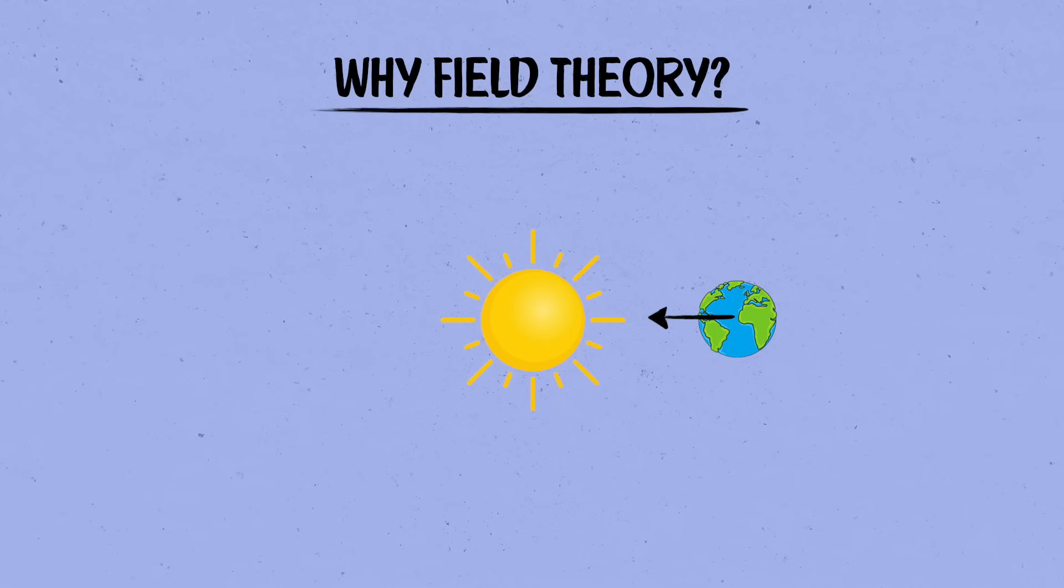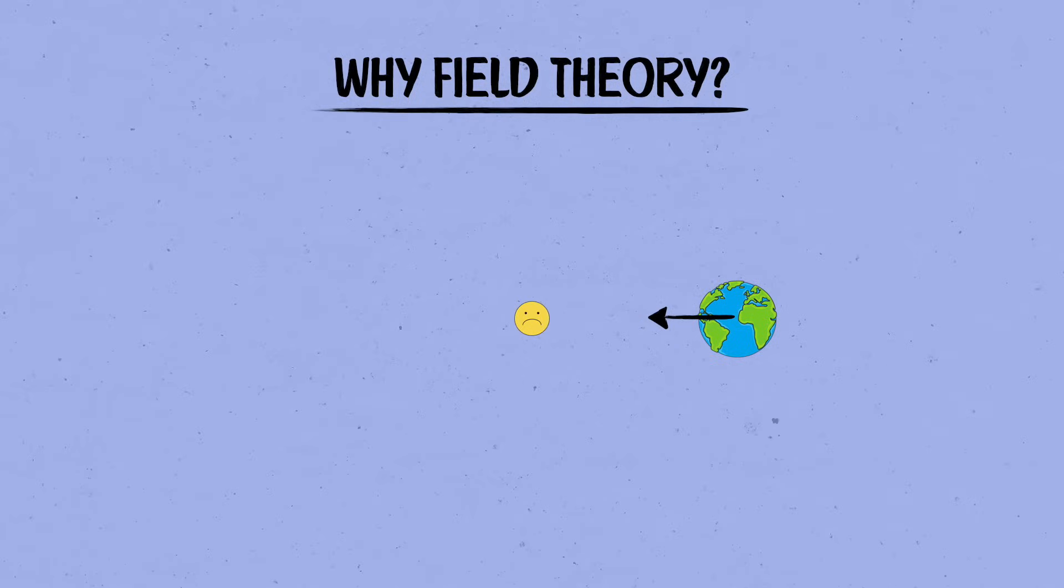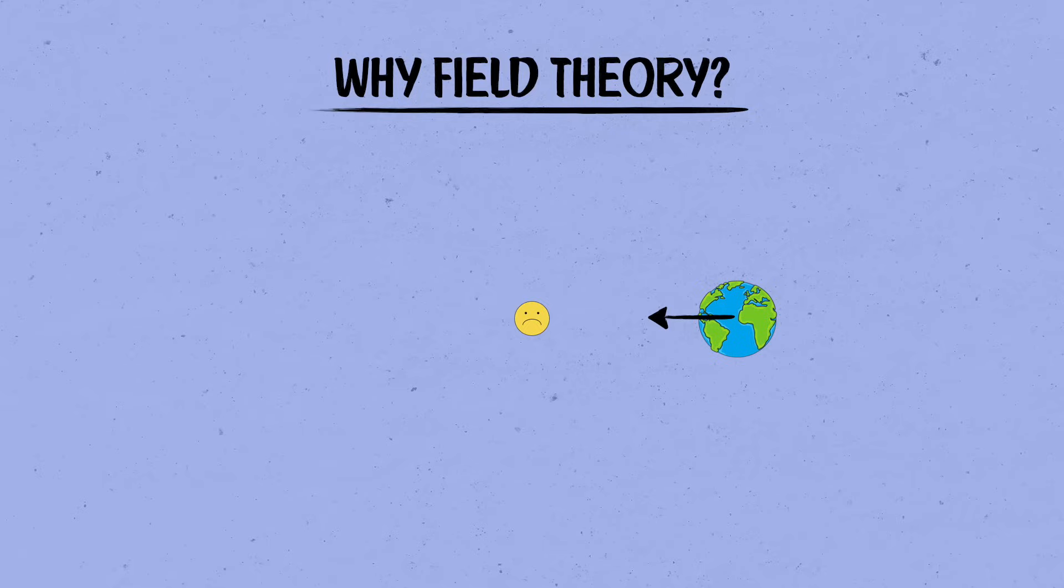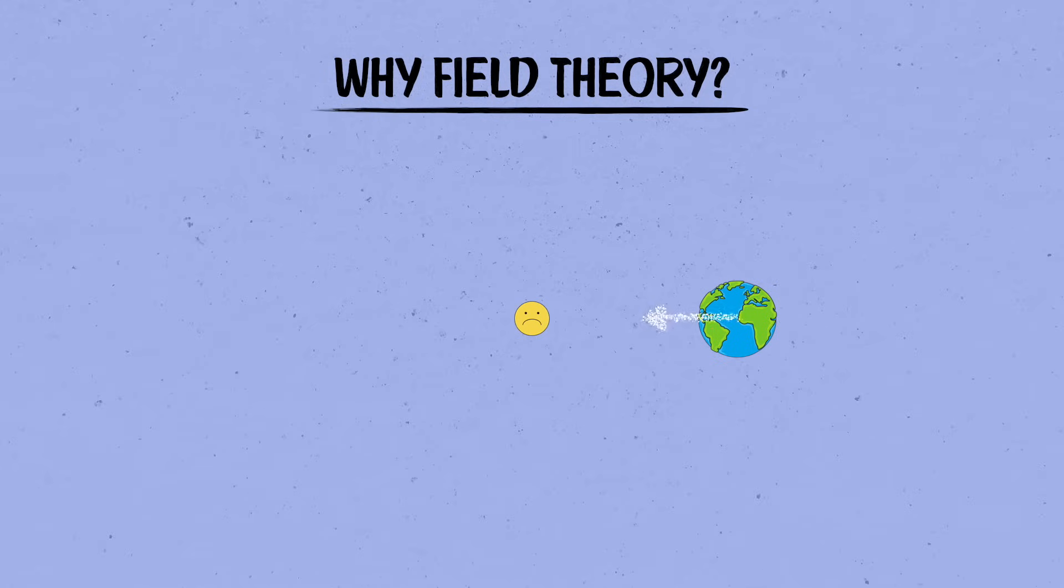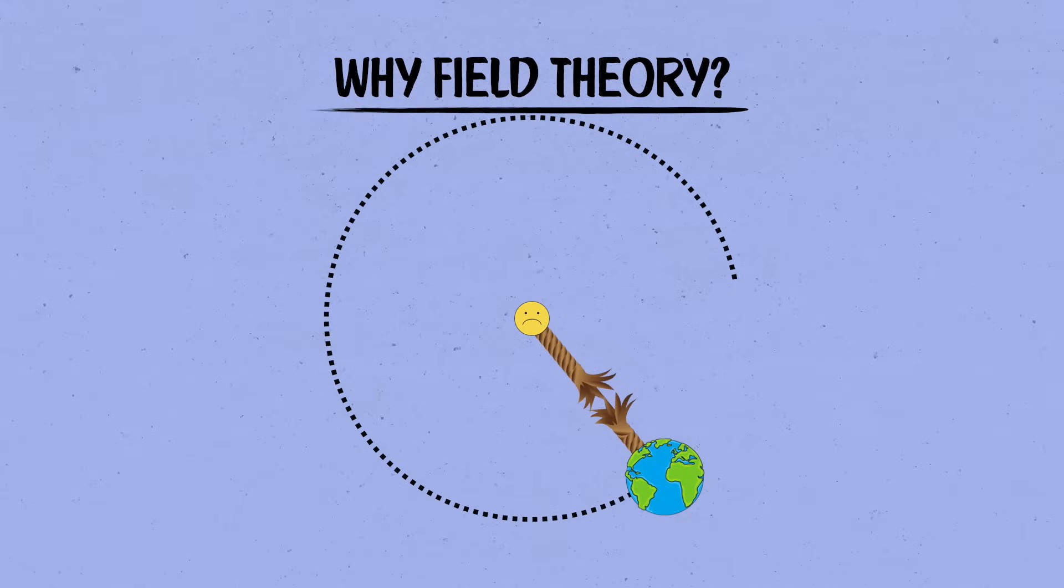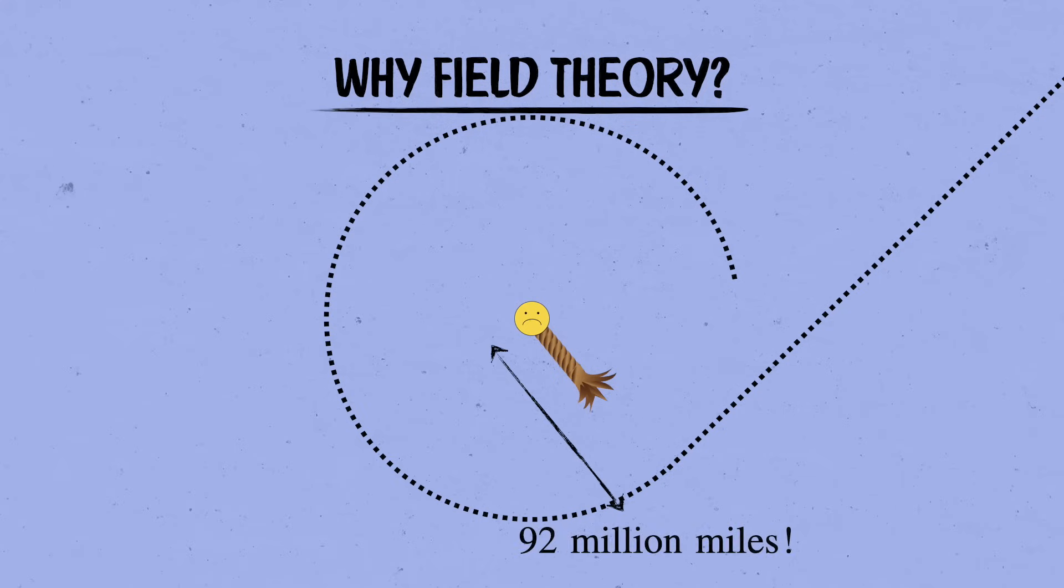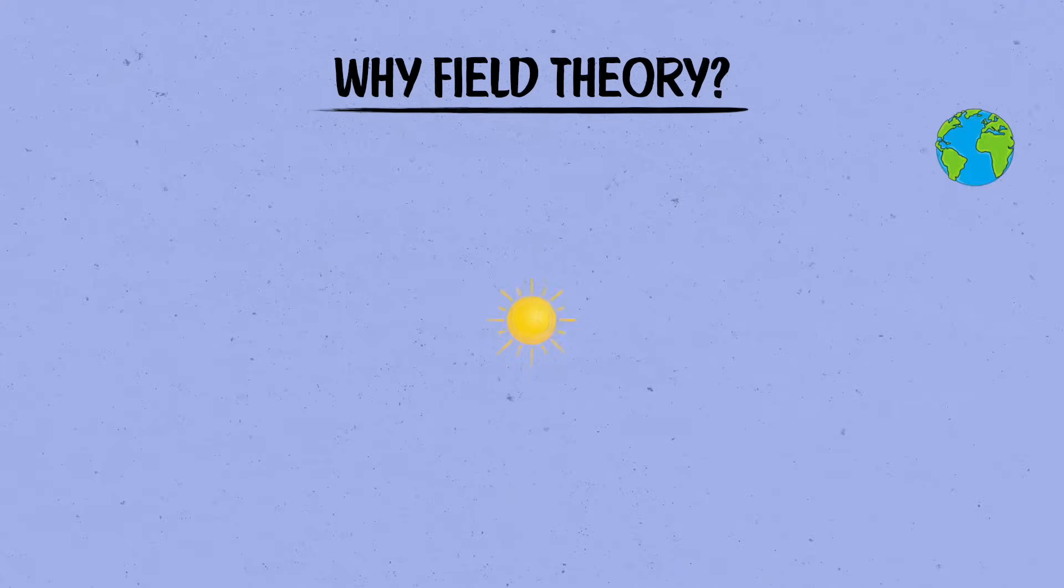But suppose that by some tragic calamity the sun suddenly exploded, or just mysteriously popped out of existence. What would happen? According to Newton's theory, the gravitational force of the sun on the earth would suddenly vanish. It's as if the earth had been swinging around on a rope like a tetherball, when the cord suddenly snaps and the planet veers off on a straight line. Apparently, the disappearance of the sun would instantaneously cause a dramatic change in the motion of the earth 92 million miles away. But that's total nonsense.